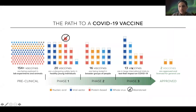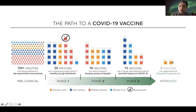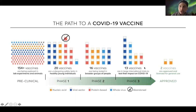A la fase 3 llegaron solamente 13 tipos de vacunas en el mundo. Esto era para noviembre del año pasado aproximadamente. Para diciembre solamente había dos vacunas aprobadas, las dos de ácido nucleico: las dos de RNA mensajero. Una es la de Pfizer y la otra es la de Moderna.